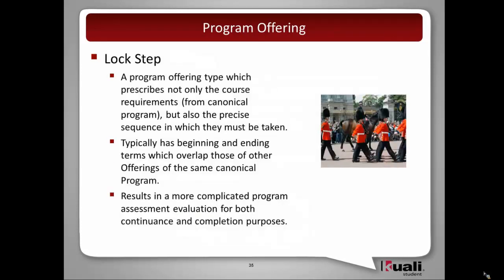A lockstep program offering prescribes not only the course requirements, which come from the canonical program, but also the precise sequence in which they must be taken, typically defined by beginning and ending term, which may overlap those of other offerings of the same canonical program. For example, you may have a program that starts in the fall and lasts 18 months, and another with the same requirements that starts in the spring and lasts 18 months — those could be two separate offerings. Lockstep programs result in more complicated program assessment evaluation for both continuance and completion purposes, because it's not just the courses but the sequence in which they're taken.